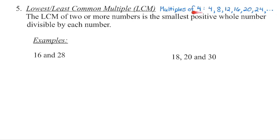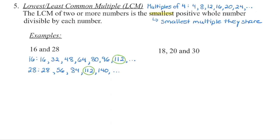The multiples of 4 begin with 4, 8, 12, 16 — we're taking 4 and multiplying it by 1, 2, 3, 4, kind of like skip counting. We can list the multiples of 16 and the multiples of 28, and the smallest number that they both share is what we call the least common multiple — it is the smallest multiple common to each of those numbers. 112 is the smallest number that will be divisible by both 16 and 28.